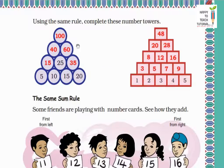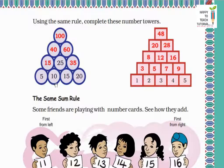Using the same rule, let's complete this number tower. We start from the bottom and add pairs of numbers to fill the box above. So: 5 plus 10 equals 15; 10 plus 15 equals 25; 15 plus 20 equals 35. Then: 15 plus 25 equals 40; 25 plus 35 equals 60. Finally: 40 plus 60 equals 100. That's how we fill up the number tower.